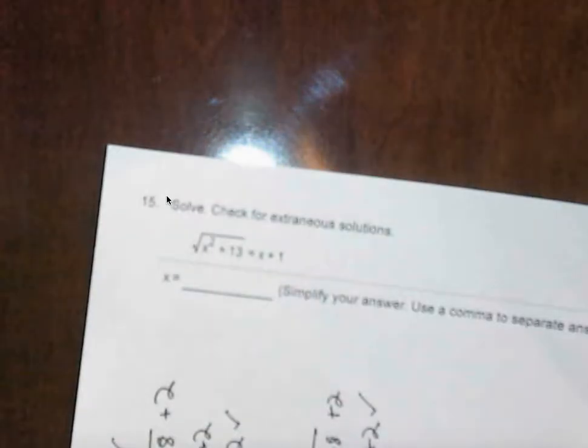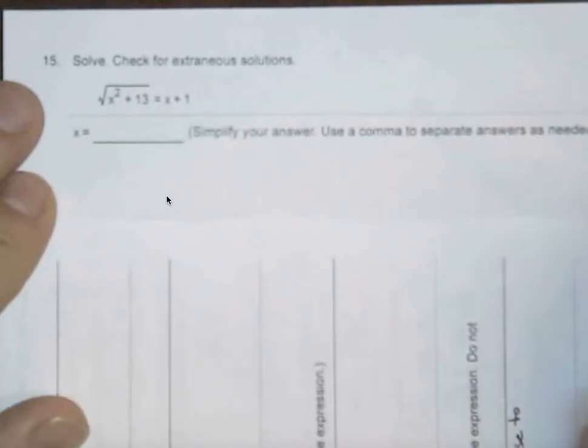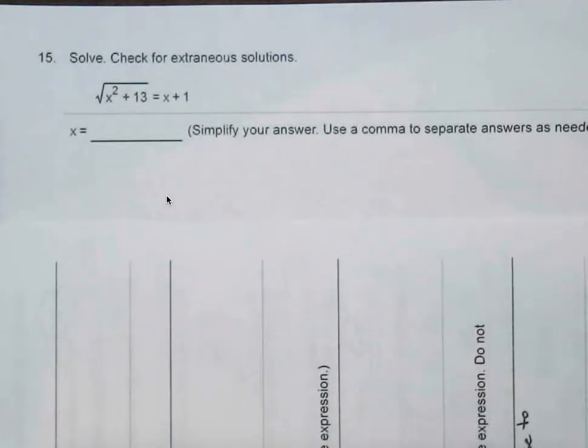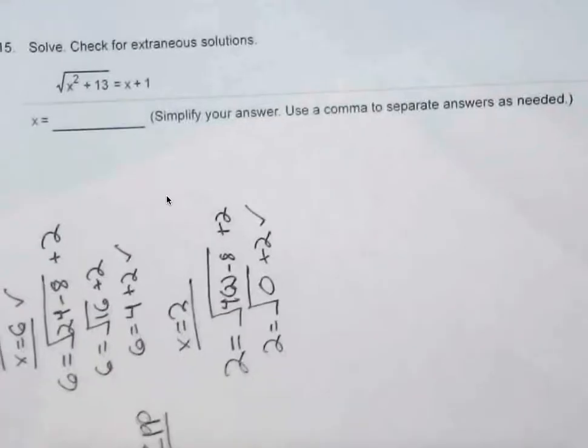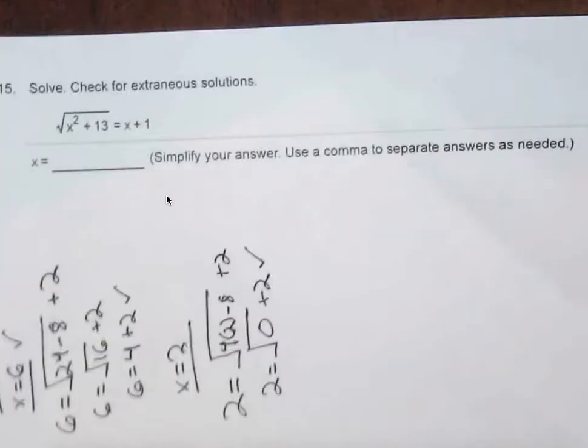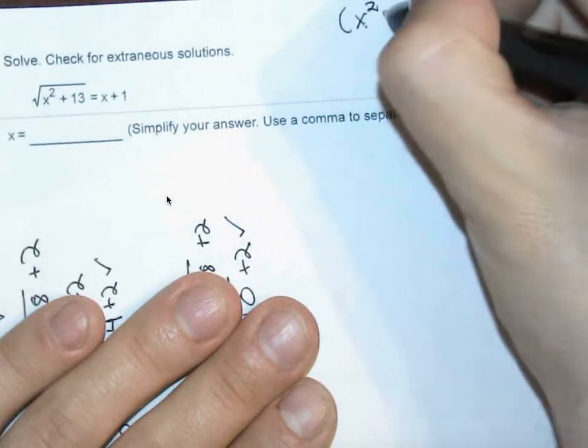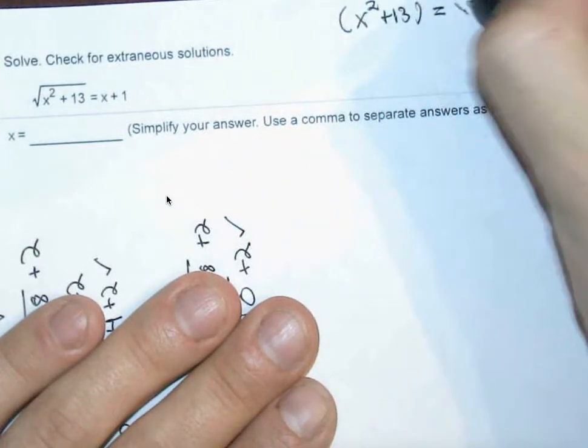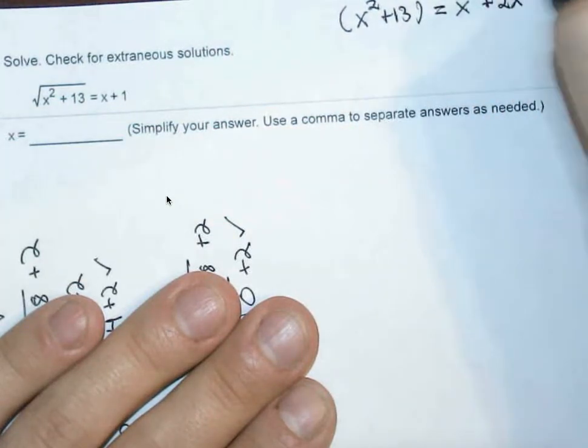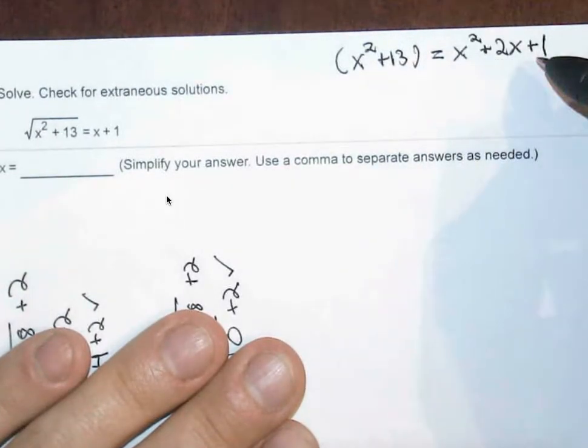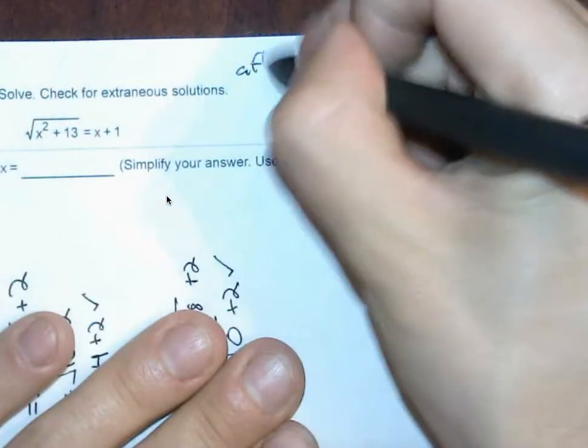And finally, we conclude with solving where we have all of this under a radical, square root of x squared plus 13 equals x plus 1. And same song and dance. Try to isolate your radical. We are actually already capable of doing that. So if we square both sides, that gets us to foil on the right. So pretty much x squared plus 13 equals x squared plus 2x plus 1. This is after squaring both sides.